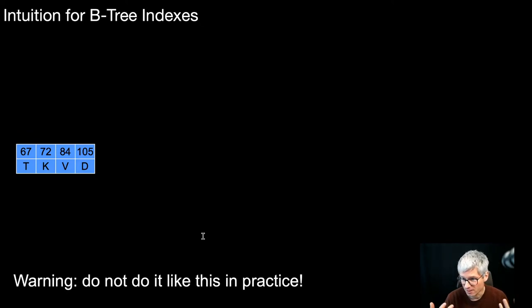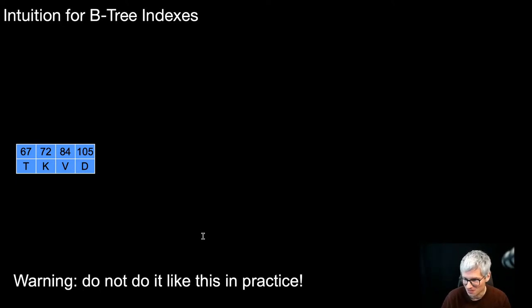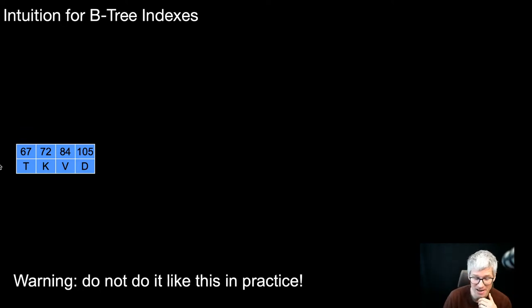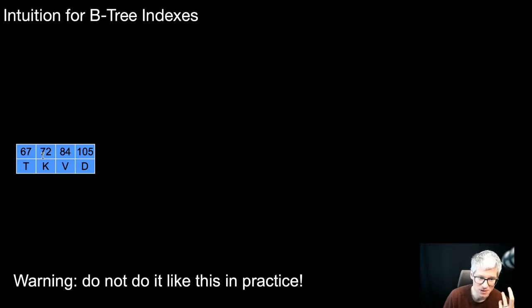Before going into how a B-tree really looks, I will give some intuition and introduce some terminology. Note: do not do it like this in practice — this intuition slide is not how you would do it. Basically what we're trying to do is organize key-value pairs. In this example, keys are numbers and values are associated with those keys — it's basically a dictionary or map, as you know from Python. Here there are four different entries: the first maps 67 to T, the second 72 to K, and so forth.